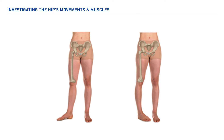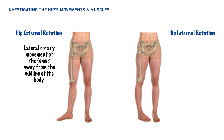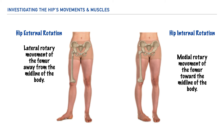Our last two movements are hip external and internal rotation. Using our femur as the basis for movement, we can describe hip external rotation as a lateral rotary movement of the femur away from the midline of the body, and hip internal rotation would of course be medial rotary movement of the femur toward the midline of the body.